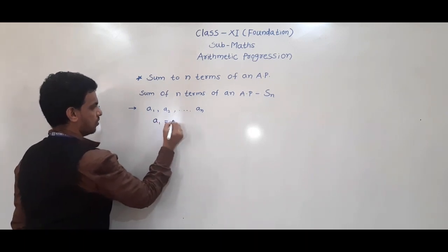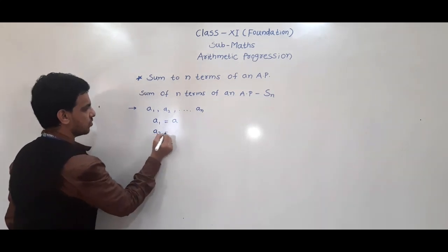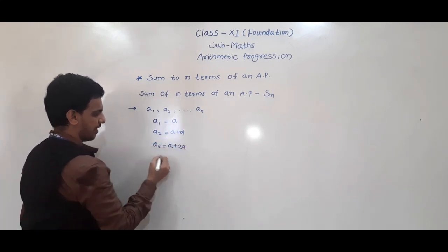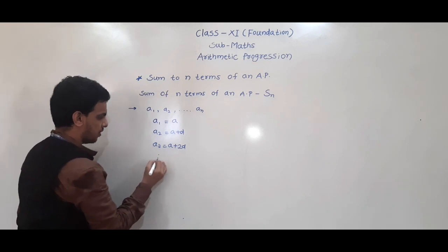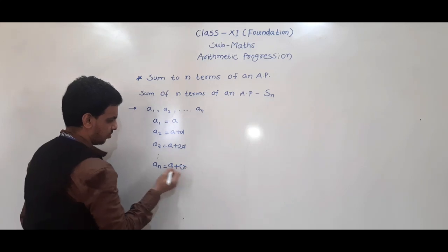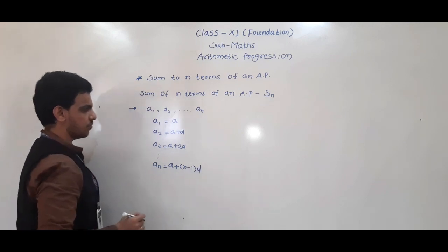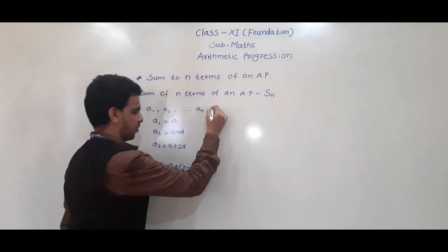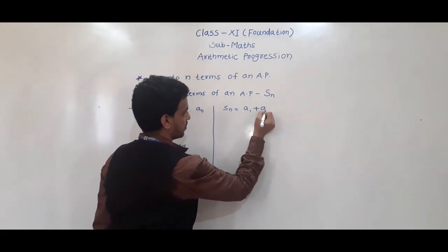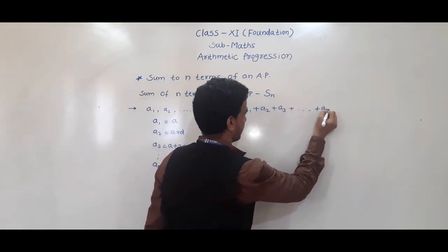We represent the first term generally as a (i.e., A). A2 is a + d, A3 is a + 2d, and so on. The nth term or general term we write in the form a + (n−1)d. So if we have to find Sn, that is Sn = A1 + A2 + A3 + ... + An.